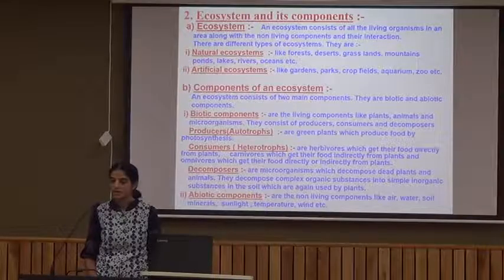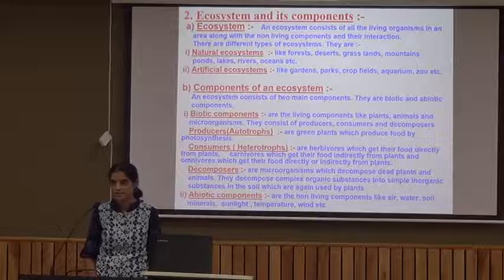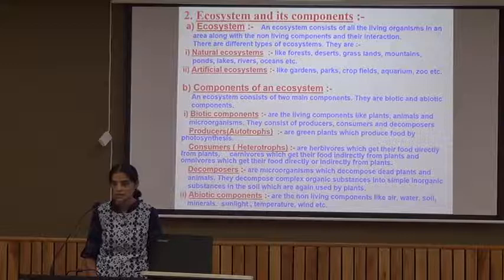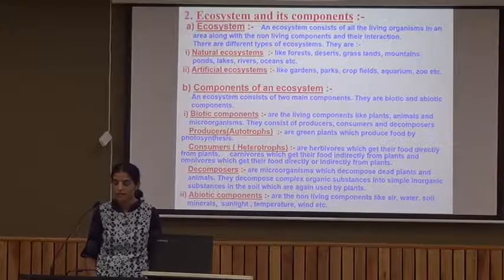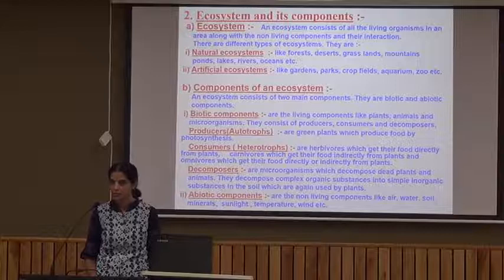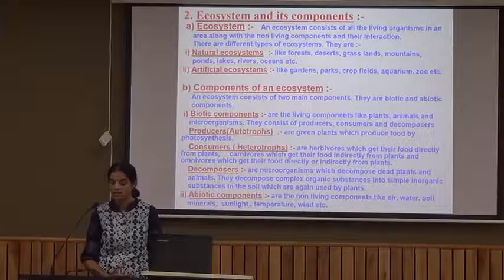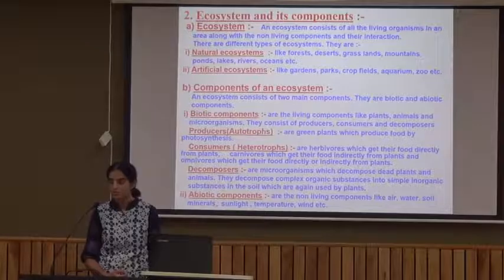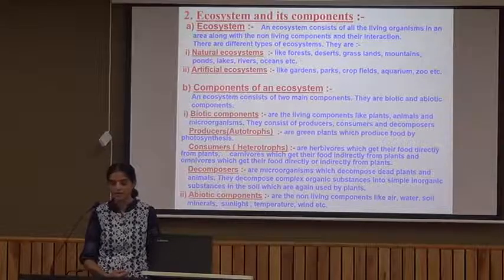Next comes the ecosystem and its components. An ecosystem consists of all the living organisms in an area along with the non-living components and their interaction. Ecosystems are also of two types: natural and artificial.